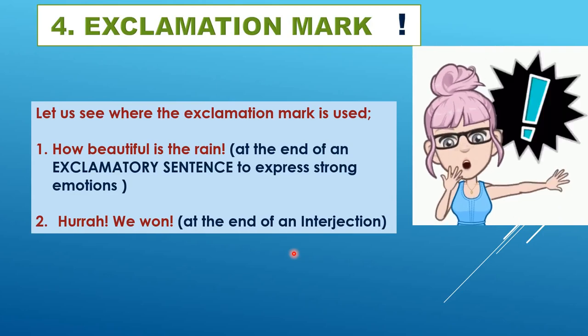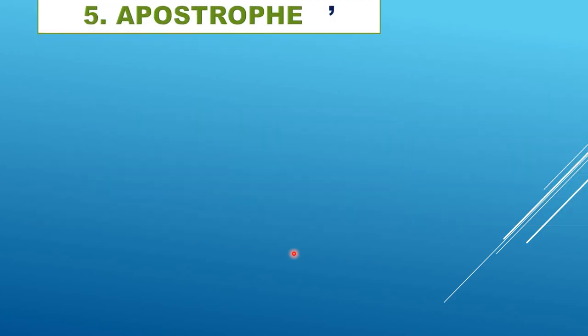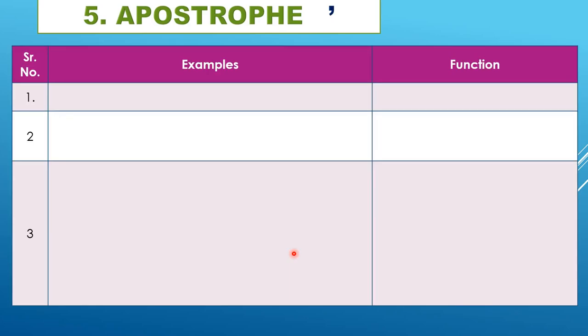Now we come to apostrophe — a very important punctuation mark. A comma is written at the bottom but an apostrophe is on top. Apostrophe is different from quotation marks or inverted commas. It has several uses. First, it shows possession: 'This is Raju's bat' — the apostrophe shows whose bat it is. It is showing possession.